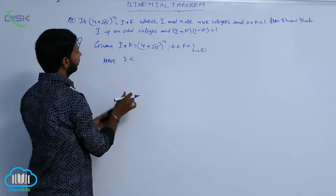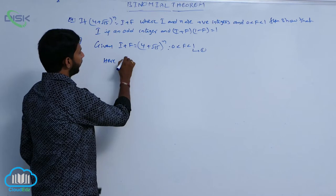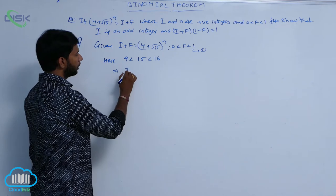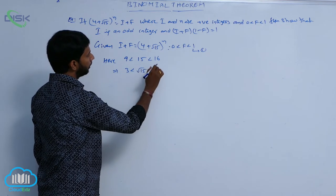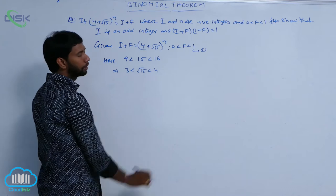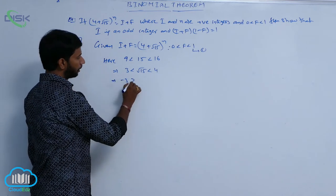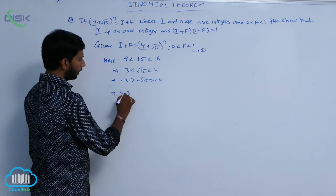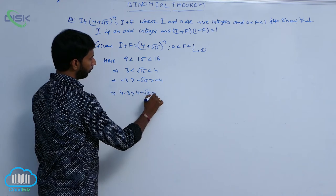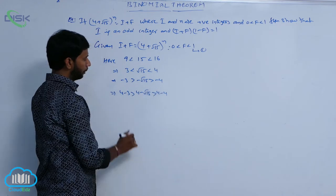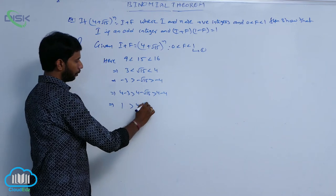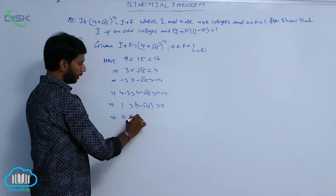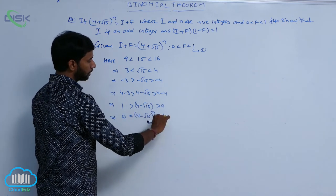Here, 9 < 15 < 16. Apply square root on both sides: 3 < √15 < 4. Multiply with minus: -3 > -√15 > -4. Adding 4: 4 - 3 > 4 - √15 > 4 - 4, that is 1 > 4 - √15 > 0. That implies 0 < (4 - √15)^n < 1.